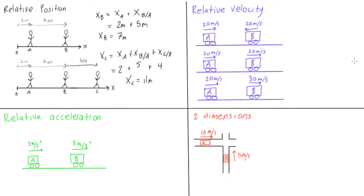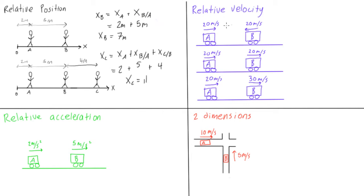Let's move on to relative velocity. Notice this is the same thing as just adding vectors. In the position example, all vectors pointed in the same direction, but with velocity we'll sometimes have vectors pointing in opposite directions — though it follows exactly the same form.